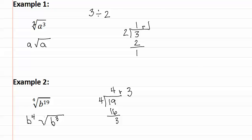Remember, you must write the index in, otherwise it is an implied two. If you would like to double check, you can take the b to the fourth on the outside and multiply four times four, which gives you sixteen, plus three, which gives you nineteen. And then you know you have the correct answer.